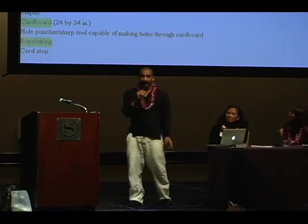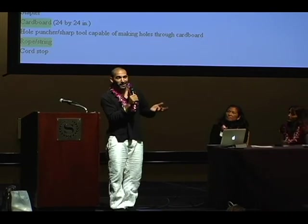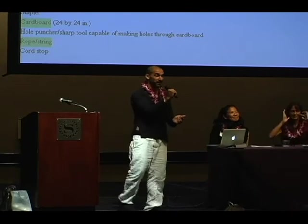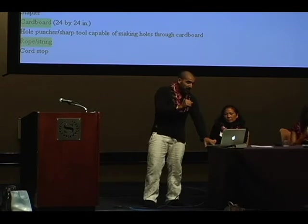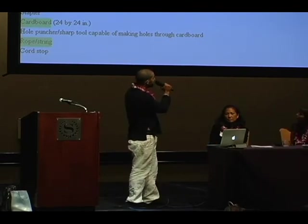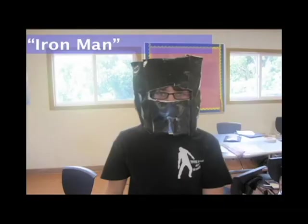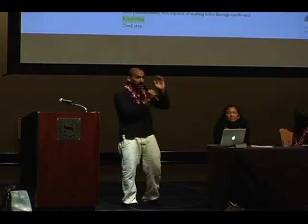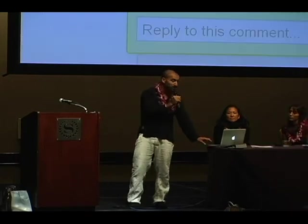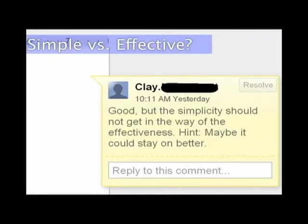How can Sebastian make his work better? How can we help him? Feedback. What I did was I took Sebastian's document, clicked on Share in the right corner, and shared it with my seventh grade class. A member of the seventh grade class is Clay, also known as Iron Man when he has his hat on. He's in seventh grade; Sebastian's in ninth grade. As an introductory project, grades six through nine did this hat. Sebastian wanted to make his hat very simple and effective, and Clay commented: 'Good, but the simplicity should not get in the way of effectiveness. Hint — maybe it should stay on better.' I thought that was very bold for a seventh grader. It was good.